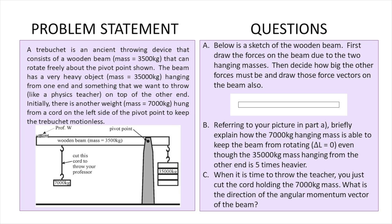So a trebuchet is an ancient throwing device that consists of a wooden beam with a certain mass that can rotate freely about the pivot point shown. The beam has a very heavy object hanging from one end and something that we want to throw, like a physics t-shirt, that is very upsetting to me, on top of the other end. Initially there is another weight hung from a cord on the left side of the pivot point to keep this device motionless. So the first thing that we have to do is we have a sketch of a wooden beam. We have to draw the forces on the beam due to the two hanging masses and then we have to decide how big the other forces must be and draw those force vectors on the beam also.